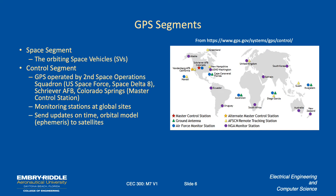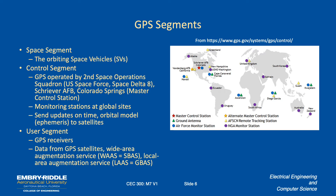The ground stations have precision atomic clocks and are used to ensure all space vehicles share the same concept of time. The ground system knows where the space vehicles are, updates them through the almanac, and lets the space vehicles know more precisely where they are. The space vehicles also determine their positions by communicating with each other and doing similar calculations to what we do on the ground. The user segment includes people like us with cell phones, pilots with GPS on the flight deck, or anyone using GPS.